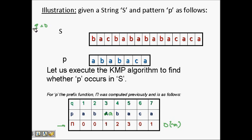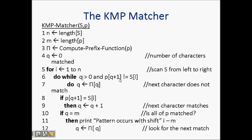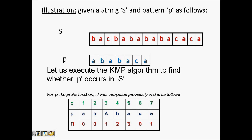The algorithm has q = 0, which tells how much matching has been done. i runs from 1 to n. At i=1, it doesn't match, so i becomes 2. We try to match the pattern there — 'a' matches, so k is incremented to 1. Then i becomes 3.